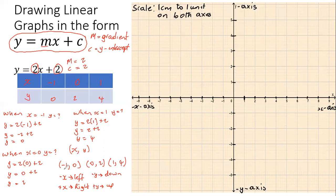The first point is (−1, 0). Starting at the origin, because the x is negative we move one unit to the left, and zero units on the y-axis. That point lands right on the x-axis, where the horizontal and vertical lines intersect.